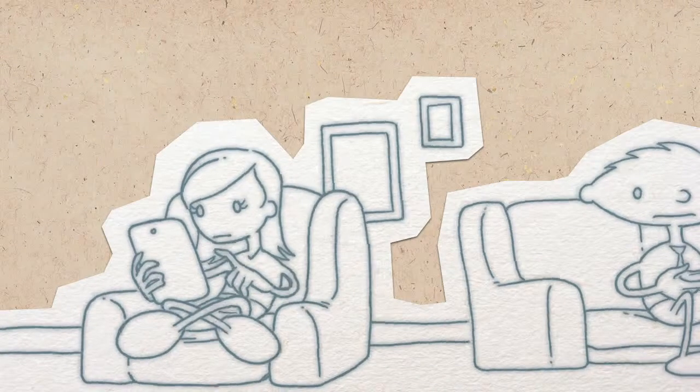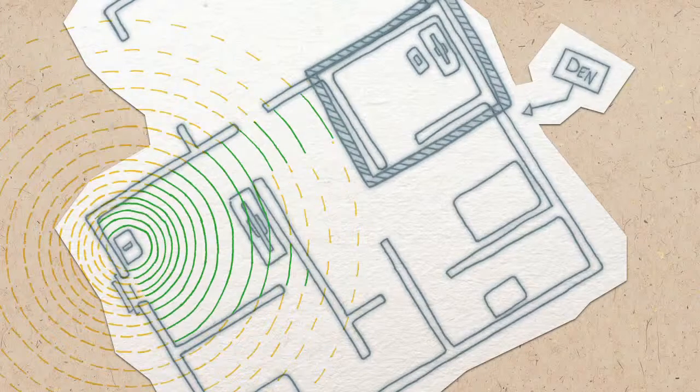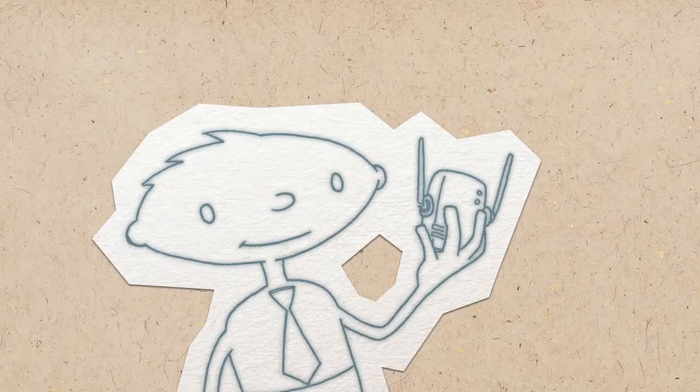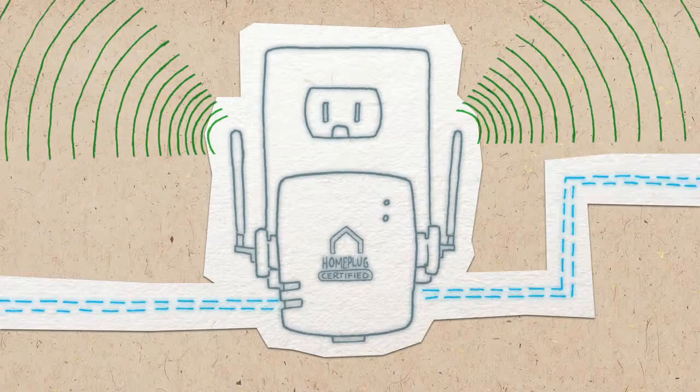This room is also a veritable black hole for wireless signals in their home. Ted decides to plug in a HomePlug hybrid wireless extender. It provides a wired connection and uses its own antenna to extend a reliable Wi-Fi connection in the den.